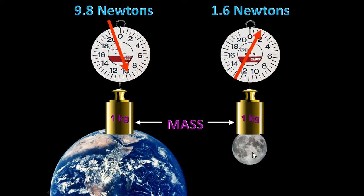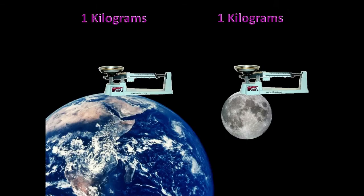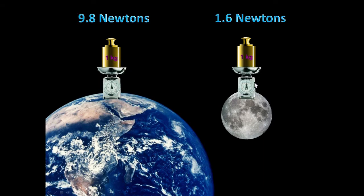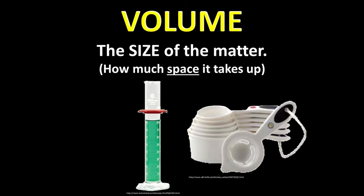If I weighed it on Earth, it would weigh about 9.8 newtons. If I weighed it on the moon, it would only weigh about one-sixth of that — about 1.6 newtons. The moon is smaller, has less gravity, so it doesn't weigh as much. But if I put one kilogram on a balance scale and slid those masses back and forth, it would balance at one kilogram. If I took that scale and the kilogram to the moon, even though the moon has less gravity, it would still balance at the same place — because the gravitational pull is less on both the masses and the object equally. Put it on a spring scale, and it would be different.